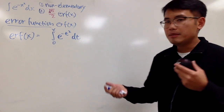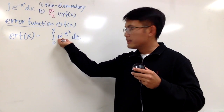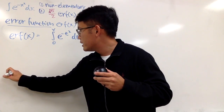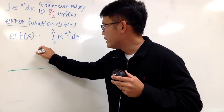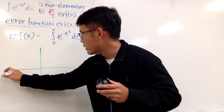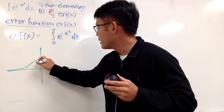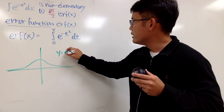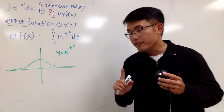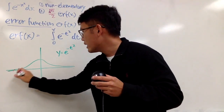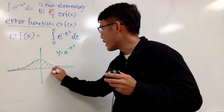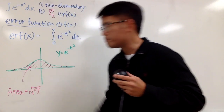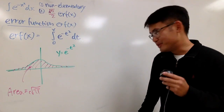Hopefully you've seen my previous video. If you look at the curve e to the negative t squared — let me just draw that for you real quick — it looks like this. This is the graph of y equals e to the negative t squared. One of the properties of this is that the whole area under the curve is surprisingly square root of pi. It's square root of pi — really cool.